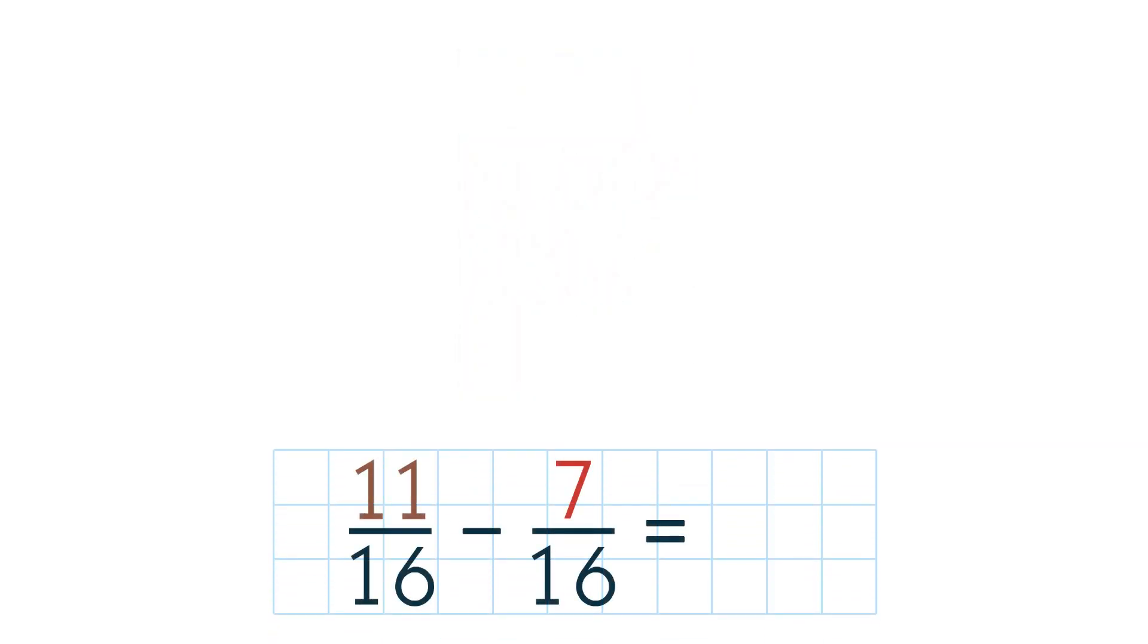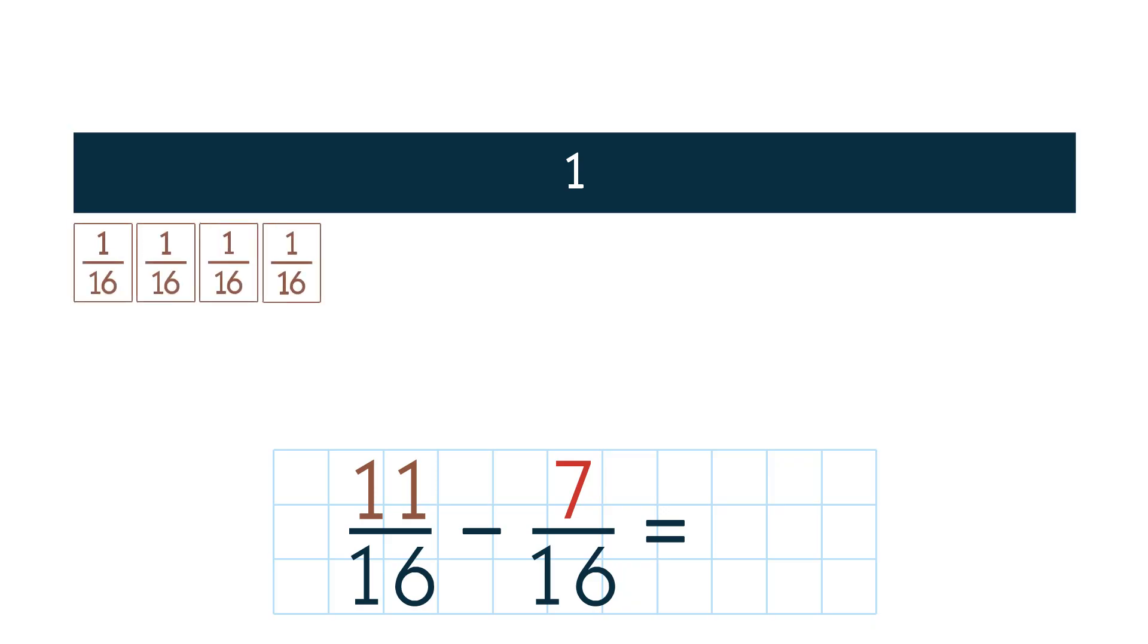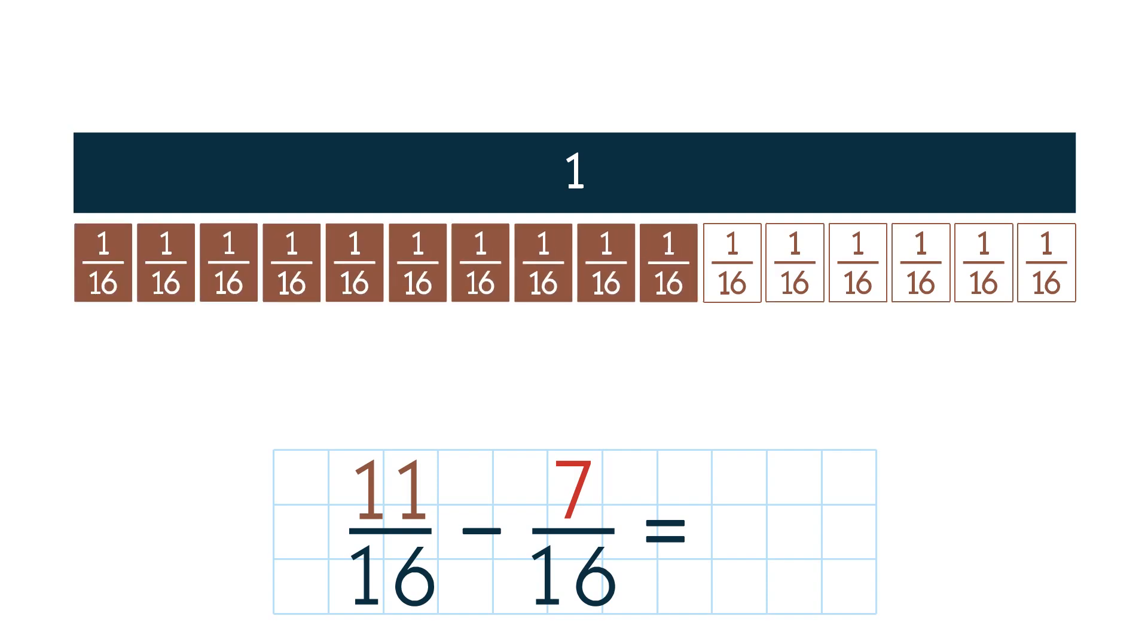Now let's solve the same problem using fraction strips. The one strip represents the whole chocolate bar. Each 1 sixteenth part represents 1 sixteenth size piece of the chocolate bar. We had 11 pieces, so we shade in 11 sixteenths.